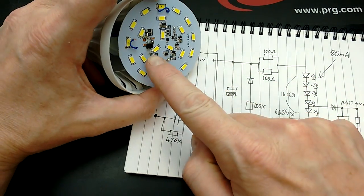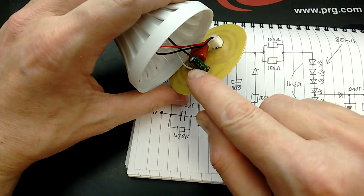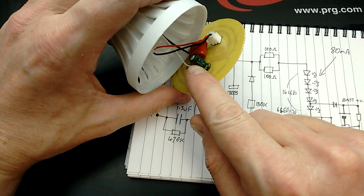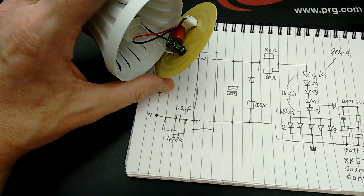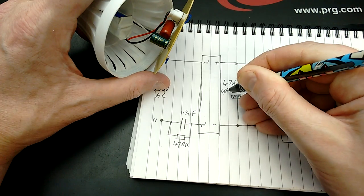It goes through a bridge rectifier, then a smoothing capacitor, which is tucked in the back here, and that gave a little bit of a problem. It's 4.7 microfarad, 400 volt.